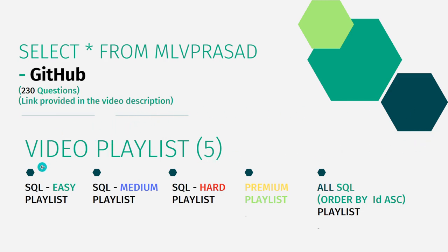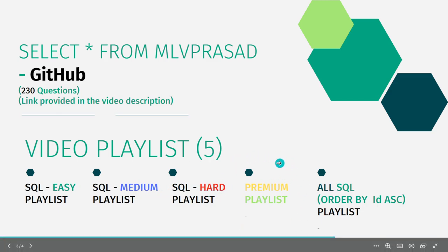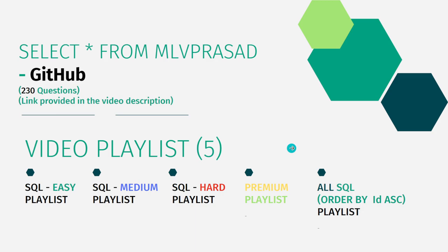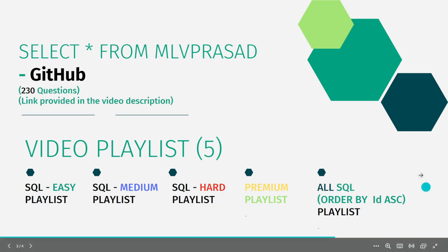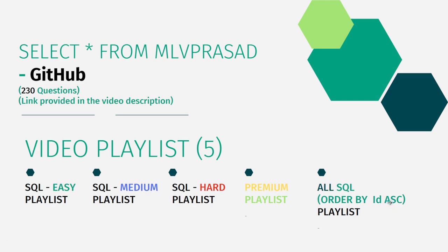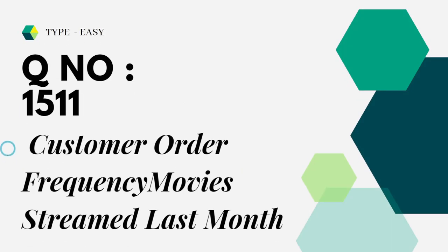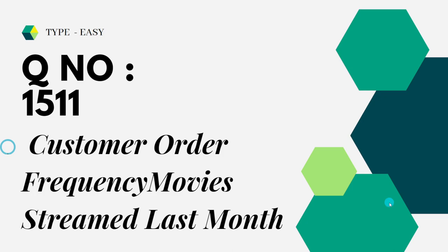In addition, all the solutions I've posted on my YouTube channel are segregated into five playlists: easy, medium, hard, and premium — for questions behind the paywall on LeetCode. All 230 questions are ordered by ID descending. Today's question is number 1511: Customer Orders Frequency.